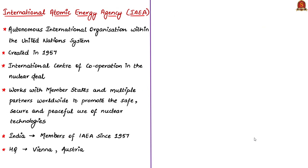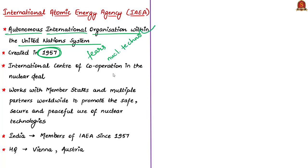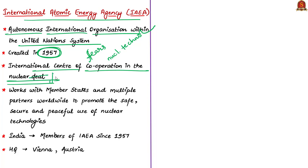The International Atomic Energy Agency is an autonomous international organization within the United Nations system, created in 1957 in response to greater fears and expectations generated by the discovery of nuclear technology. It is the international center for cooperation in the nuclear field, with the main purpose to promote safe, secure and peaceful use of nuclear technologies worldwide. India has been a member of the IAEA since 1957. The headquarters of the IAEA is located in Vienna, Austria.